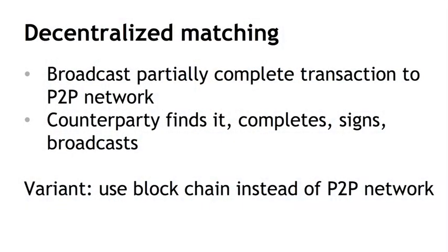The counterparty — someone who wants to buy the car — finds the transaction and determines it meets their criteria. Perhaps the transaction has encoded information about the car. This counterparty completes the transaction, signs it, and broadcasts it onto the network. At this point, the transaction is complete and has all the information needed to get onto the blockchain. It's a crude idea, but it's a basic way to decentralize the notion of a buyer finding a seller — though it's very inefficient since every partial transaction needs to be broadcast to everybody in the network.